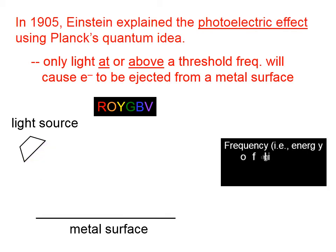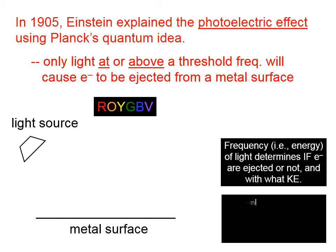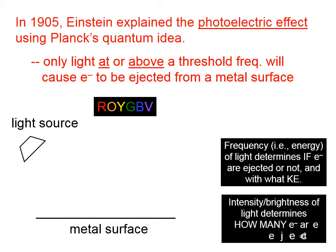To summarize: the frequency, which is related to the energy of light, determines if electrons are ejected or not, and with what kinetic energy. The intensity, or the brightness of the light, determines how many electrons are ejected. With bright violet light, many electrons were ejected, and with dim violet light — because it's still above the threshold frequency — not as many electrons are ejected.